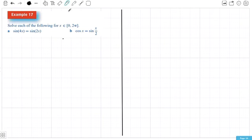The second question here, I'm going to use the same idea again with using double angle formula. And this time we've got cos(x) equals sine of x over 2.